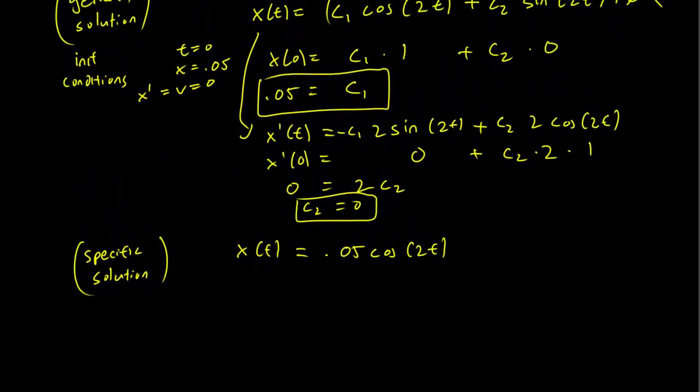And let's figure out the period, the frequency, and the amplitude. So x(t) is just going to be the cosine function. And t = 0 is here. And this is going to be 0.05. This is going to be -0.05.